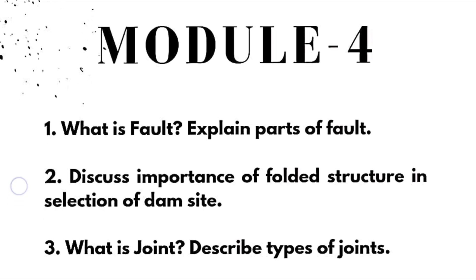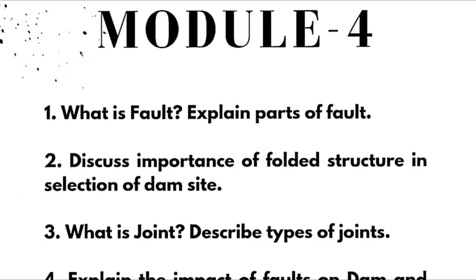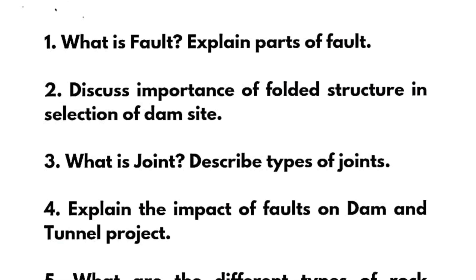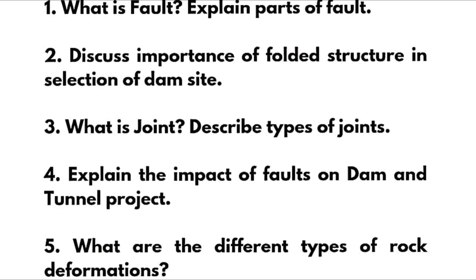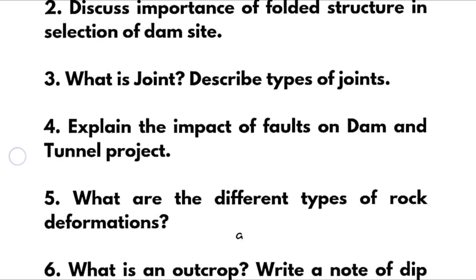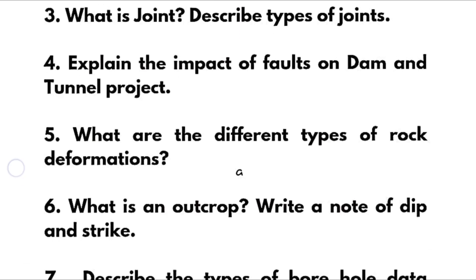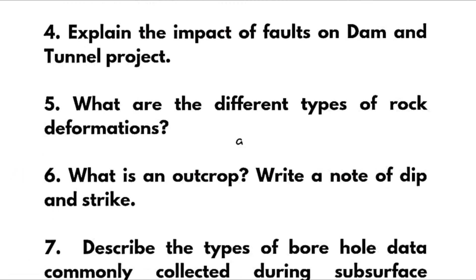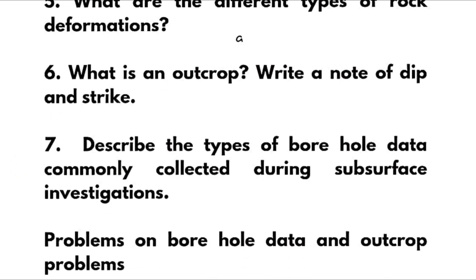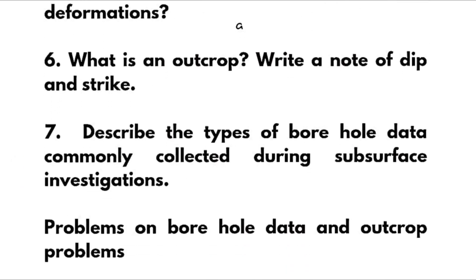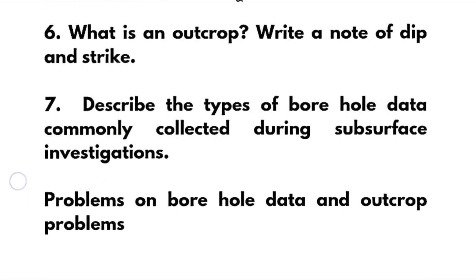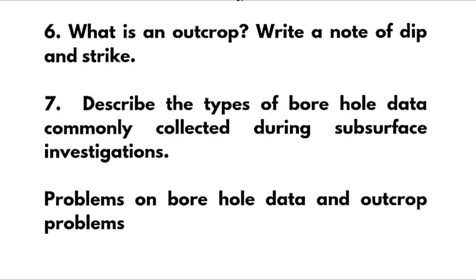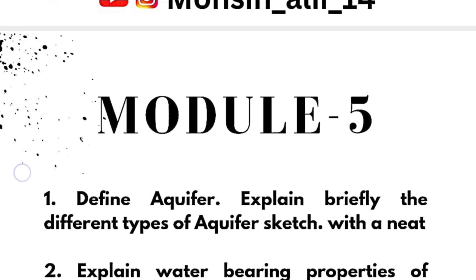Module Four: what is a fault? Explain parts of a fault. Discuss the importance of folded structures in the selection of a dam site. What is a joint? Describe types of joints. Explain the impact of faults on dam and tunnel projects. What are the different types of rock deformations? What is an outcrop? Write a note on dip and strike. Describe the types of borehole data commonly collected during subsurface investigations. Also go through problems on borehole data and outcrop problems.